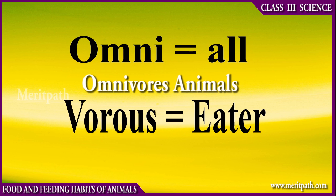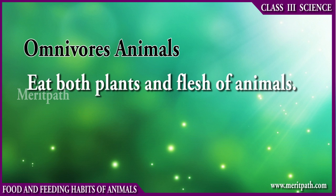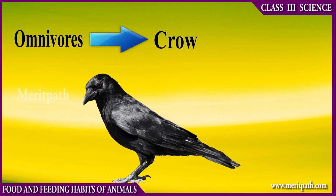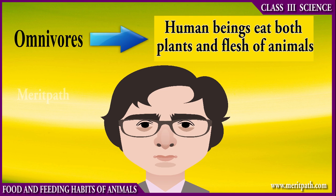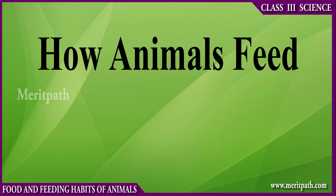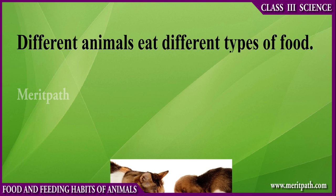Omnivorous animals: omni means all and voris means eater. Omnivorous animals are those animals which depend on both plants and animals for their food. For example, bear, crow, and human beings. They eat both plants and flesh of animals.